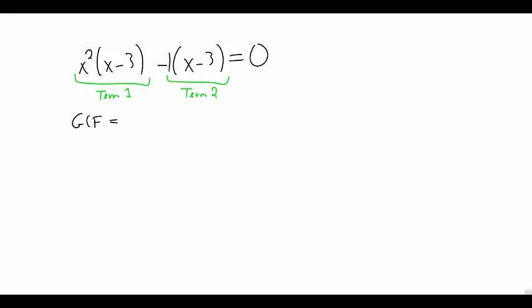The GCF here is x minus 3, so we factor that out. We get x minus 3 times, in parentheses, x squared minus 1, all equal to zero.